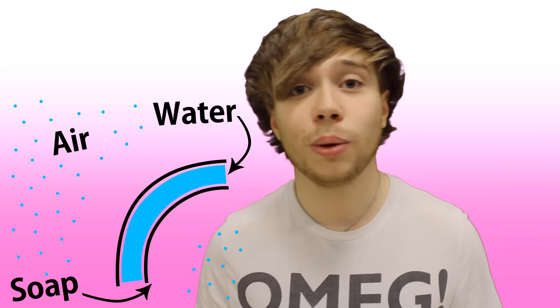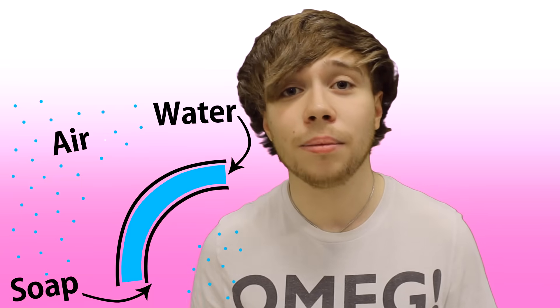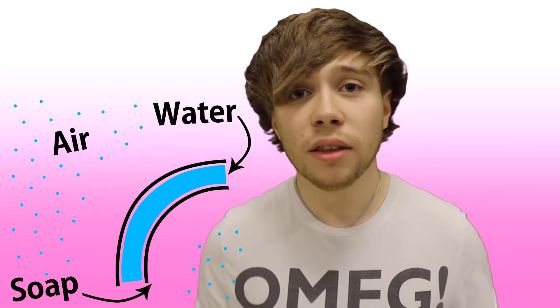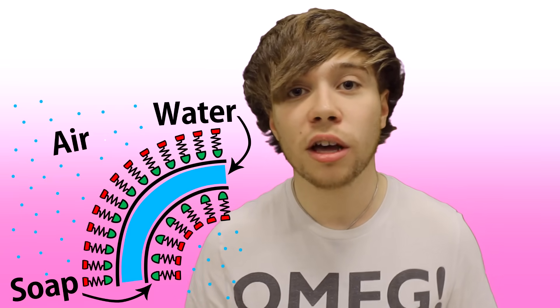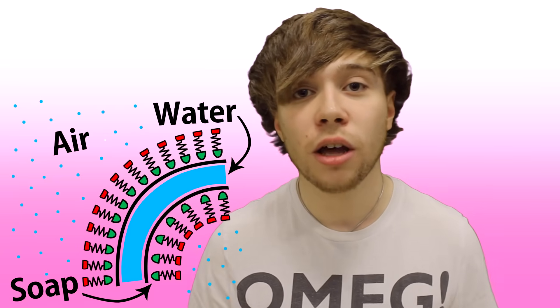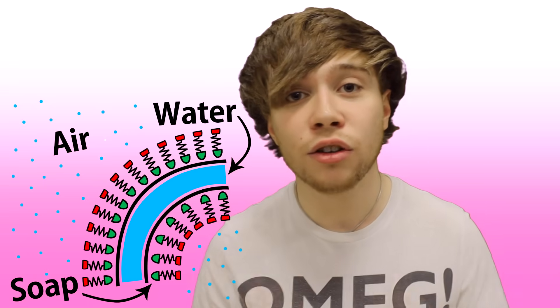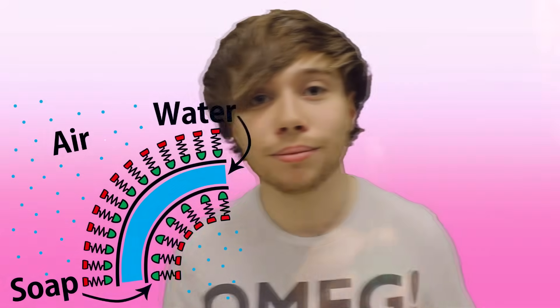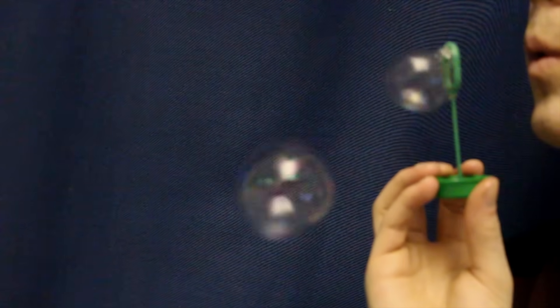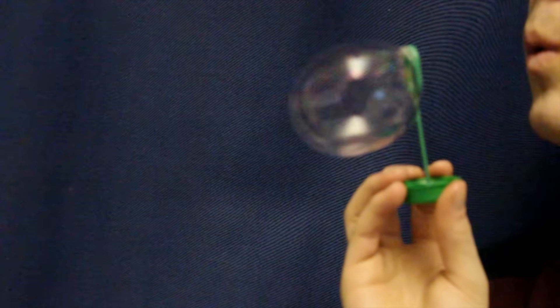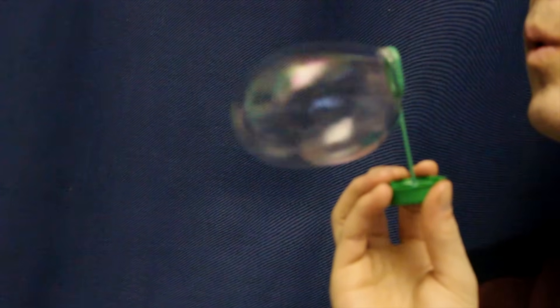Soap creates a thin film between the water and the air, because one end of the soap particle attracts water whereas the other end repels it. The force of blowing onto the bubble distorts this film. Eventually the force becomes so much that the bubble pinches off into a sphere.